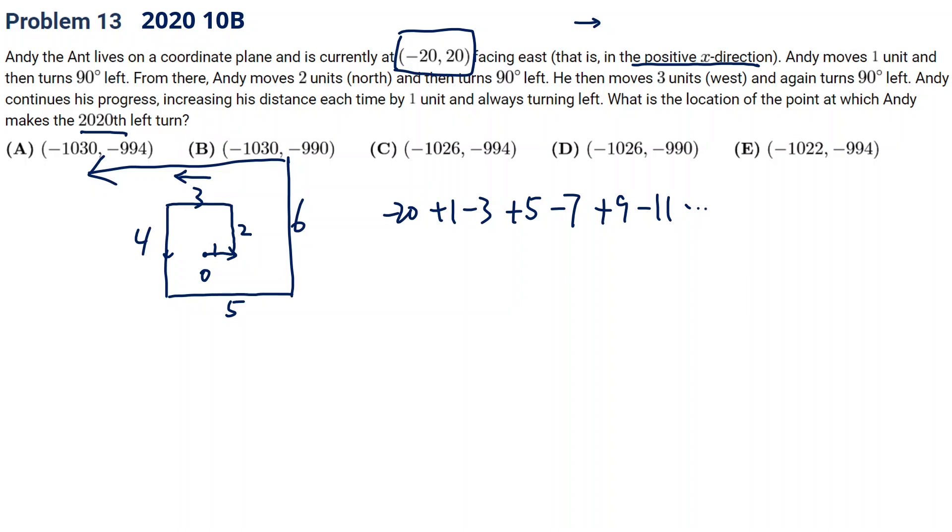So we're going to stop here. Oh, 2020th left turn. So 2020 is a multiple of 4, which means he's going down 2020.